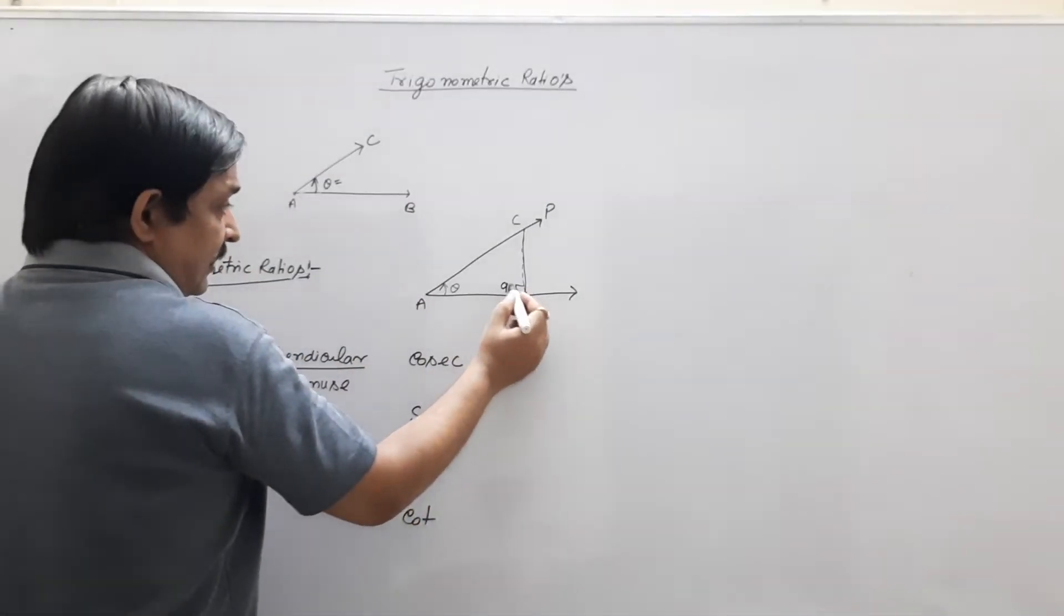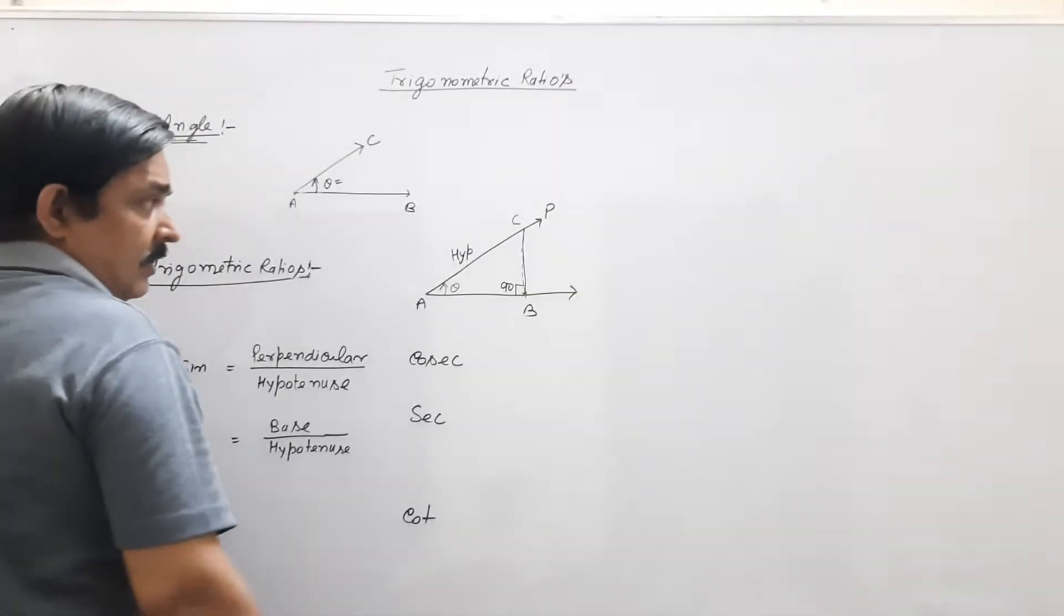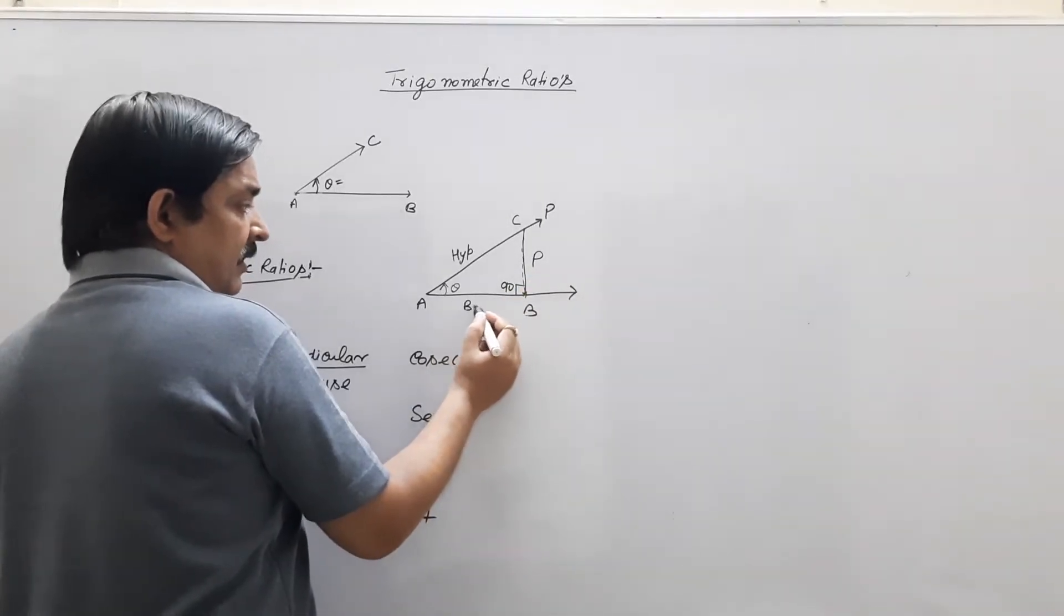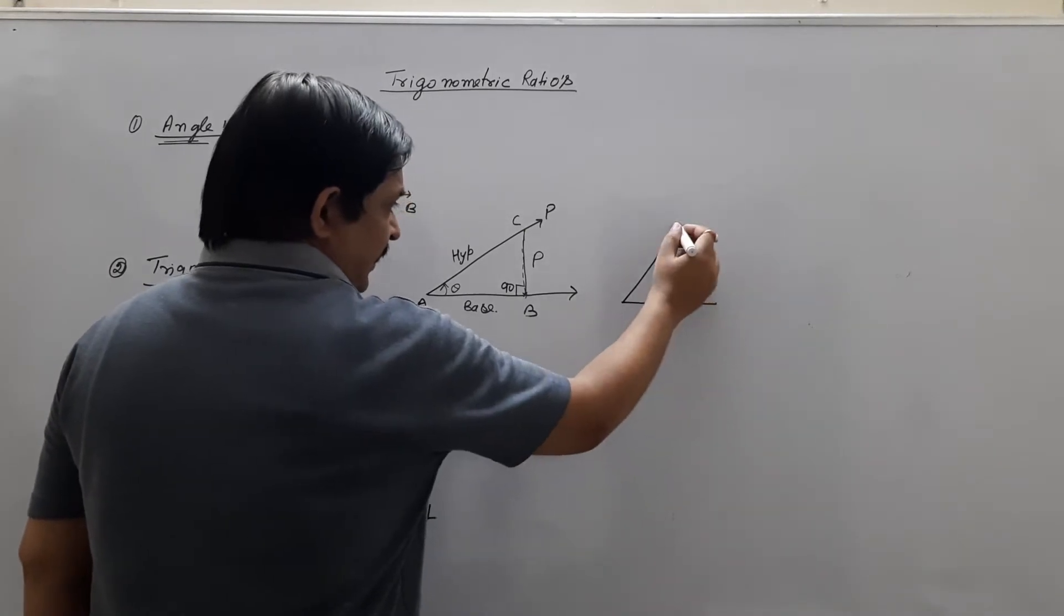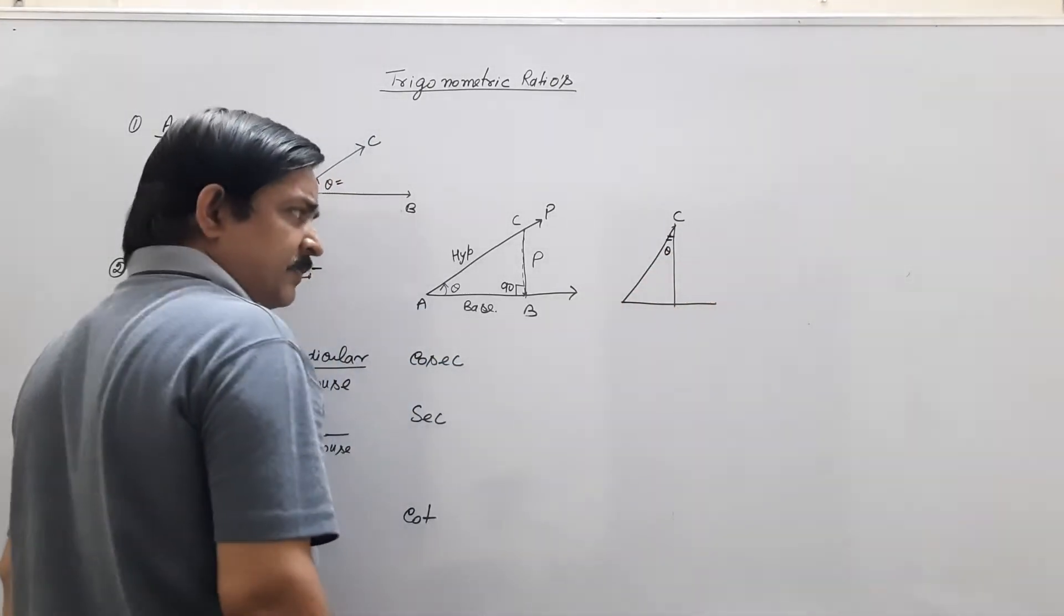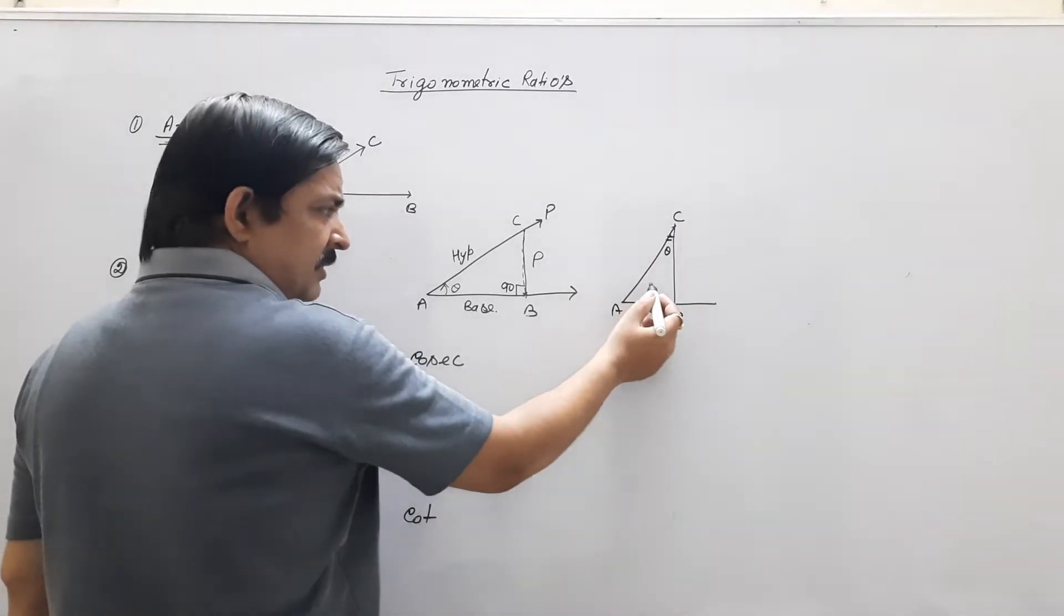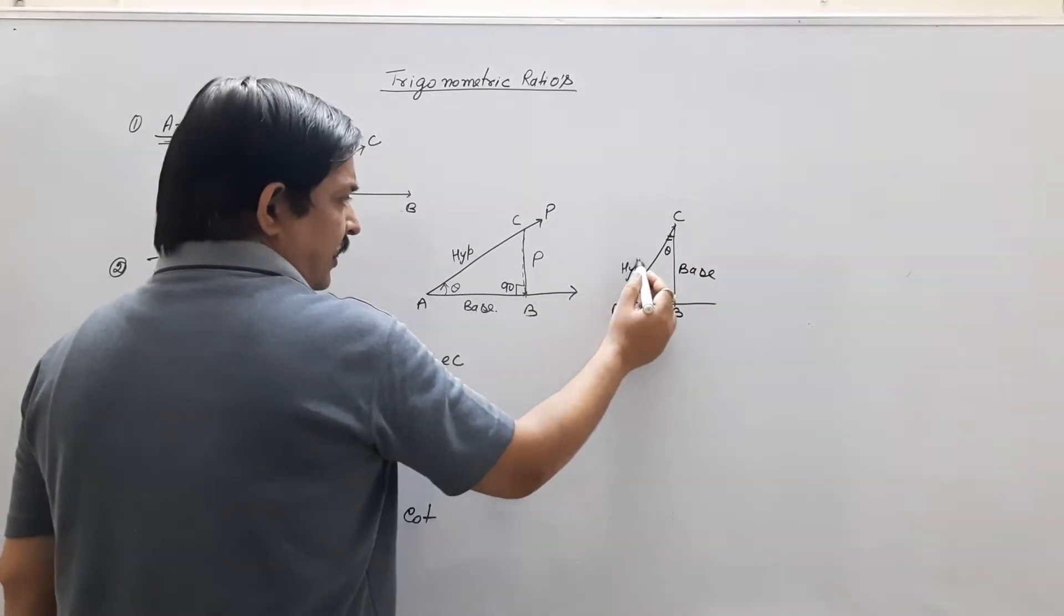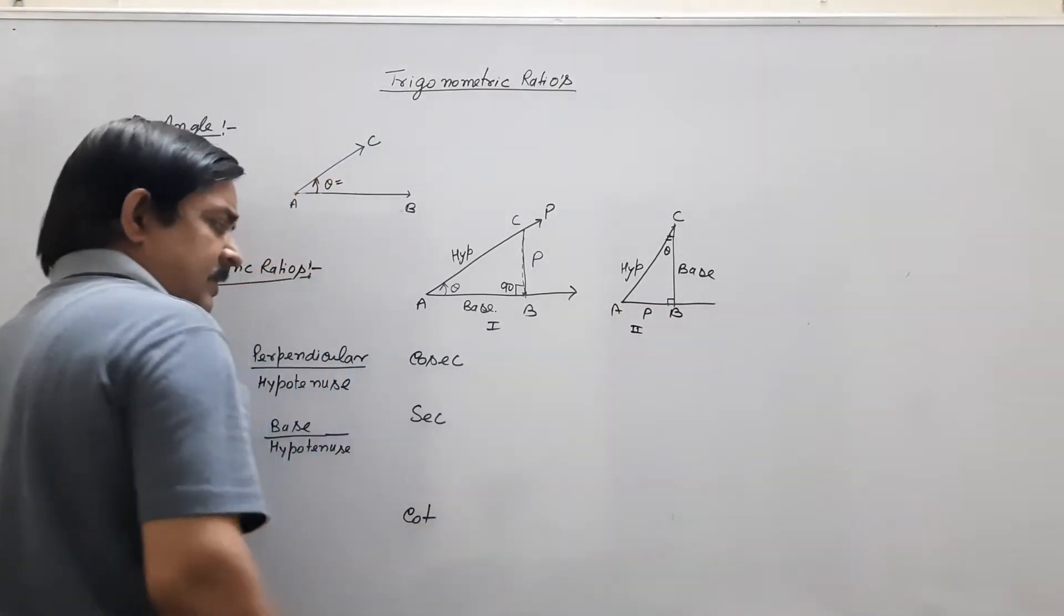Suppose this angle is 90 degree, then it's always hypotenuse. And suppose this angle considered, then that is called perpendicular and that is called base. Suppose in right angle triangle you are interested in angle C is theta, then according to this triangle, this is called perpendicular and this is called base. But this is fixed here, this is always hypotenuse. It's 90 degree. Clear?